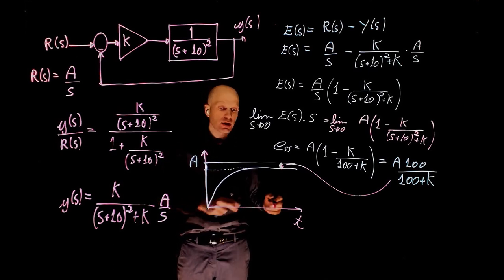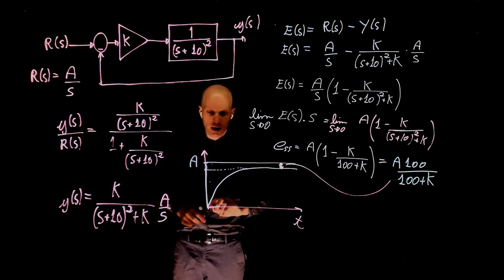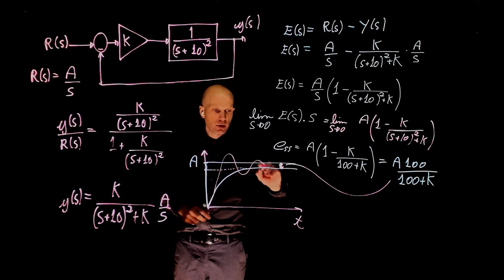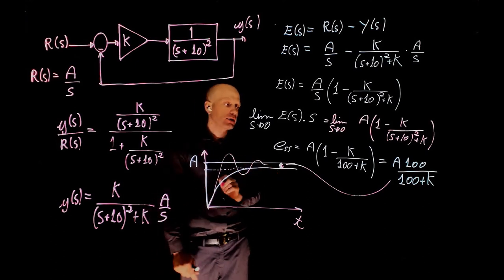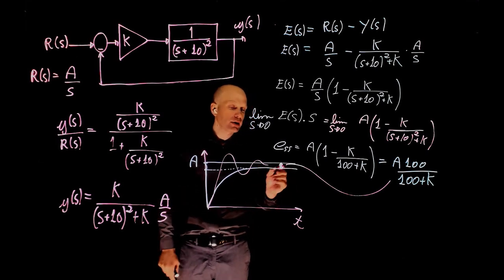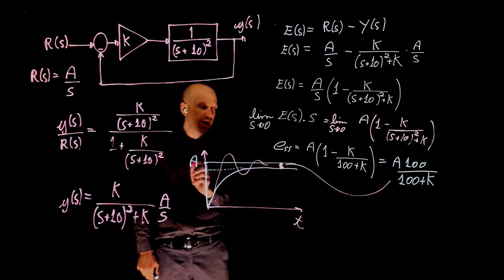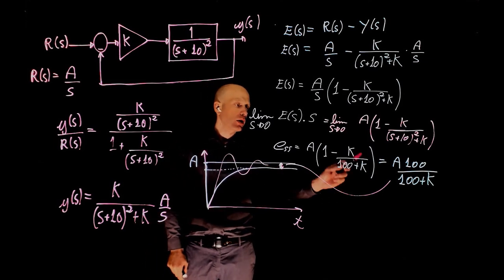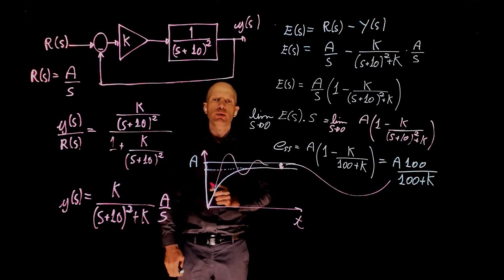But as you'll see later, this can also make this exponential curve become underdamped and eventually unstable. But for now, the concept that we need to keep in mind is that this difference here between the step and the final value is the steady state error of the robot gripper.